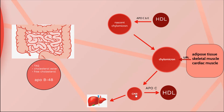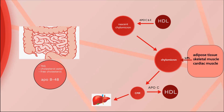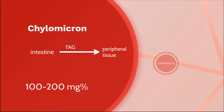The remnant portion, called chylomicron remnant, goes into the liver where it is finally degraded. This is how chylomicron transports triacylglycerol from the intestine to peripheral tissues. The desired level of chylomicron is 100 to 200 milligram percent.